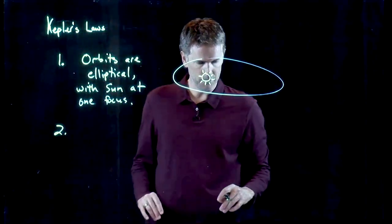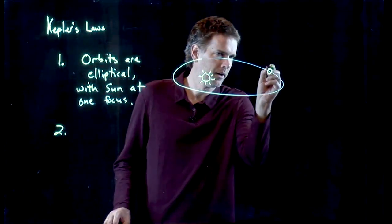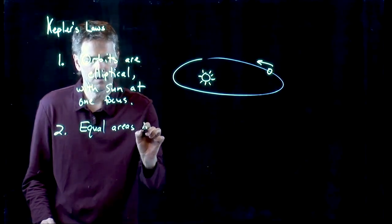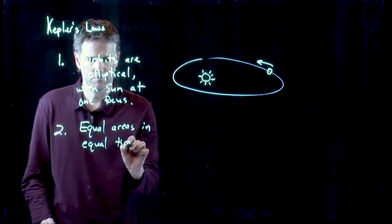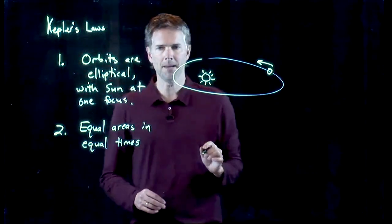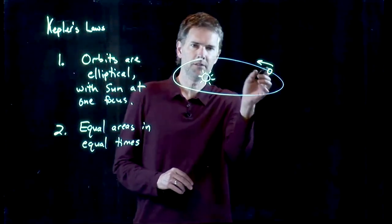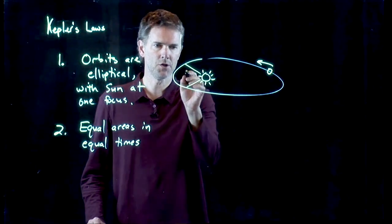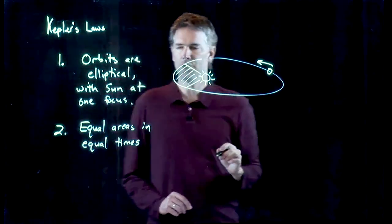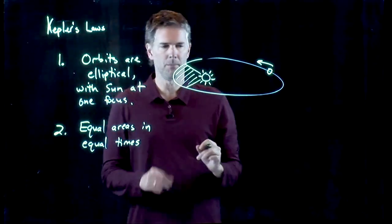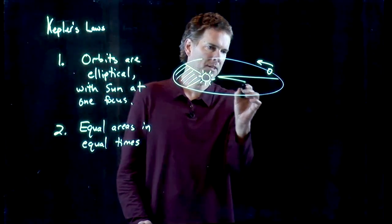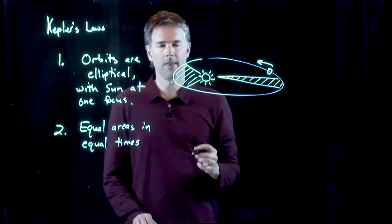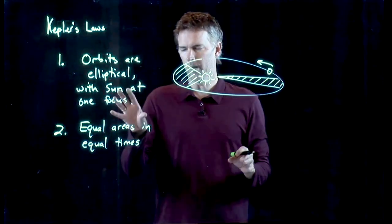The second law that he came up with — and let's draw our planet on there heading around — was the following: equal areas in equal times. What that means on our picture is, as this planet sweeps out this ellipse about the Sun, if I take a stopwatch and measure how far it moves in some amount of time and shade that area, I would get some number. But if I take the stopwatch and do the same amount of time at the far end of its elliptical orbit and map out that area, I get the exact same number — equal areas in equal times.